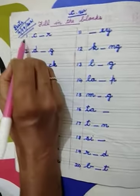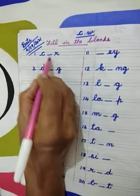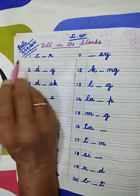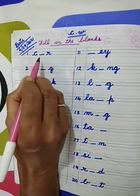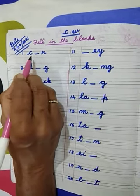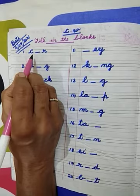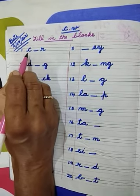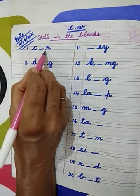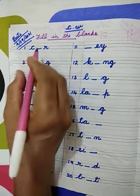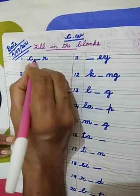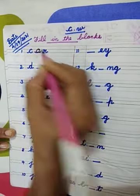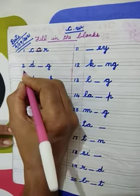Number 1: C-R. Which weight is this? Car. Spelling of car: C-A-R. Letter A is missing here. We have to write here letter A and complete the weight.